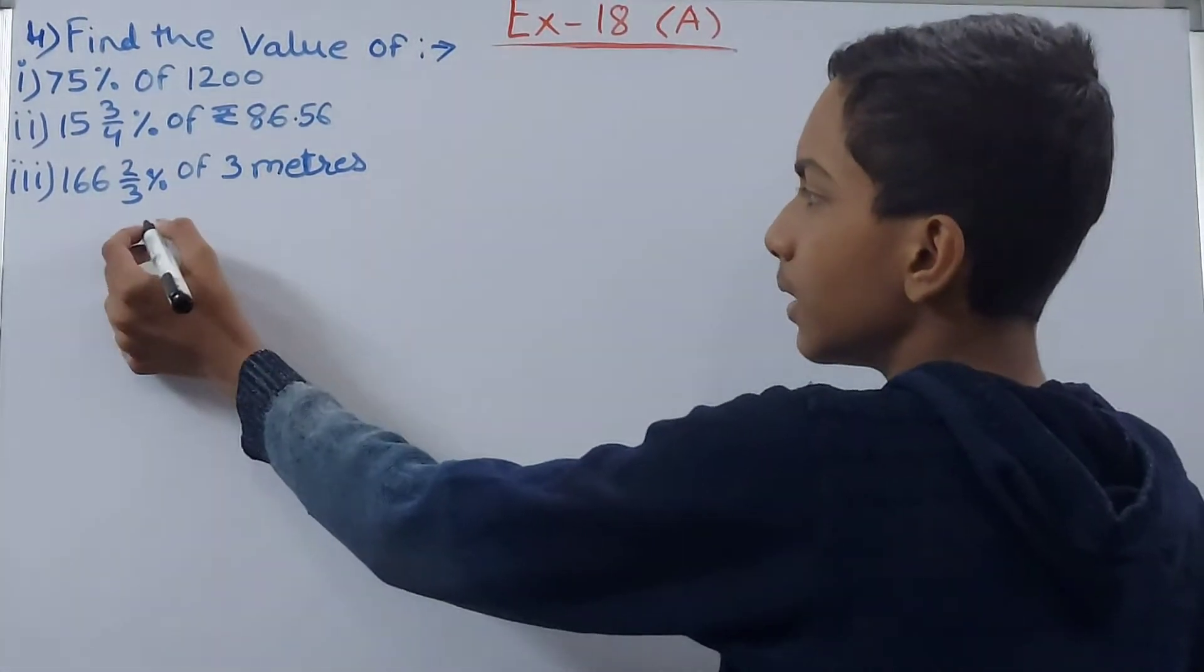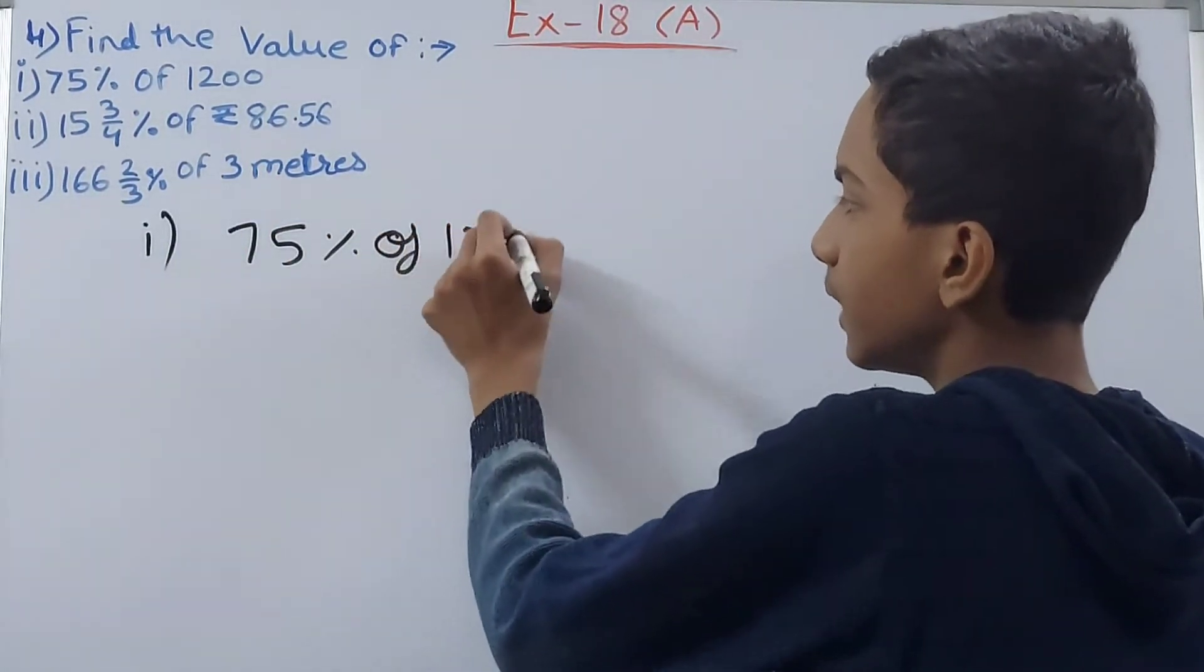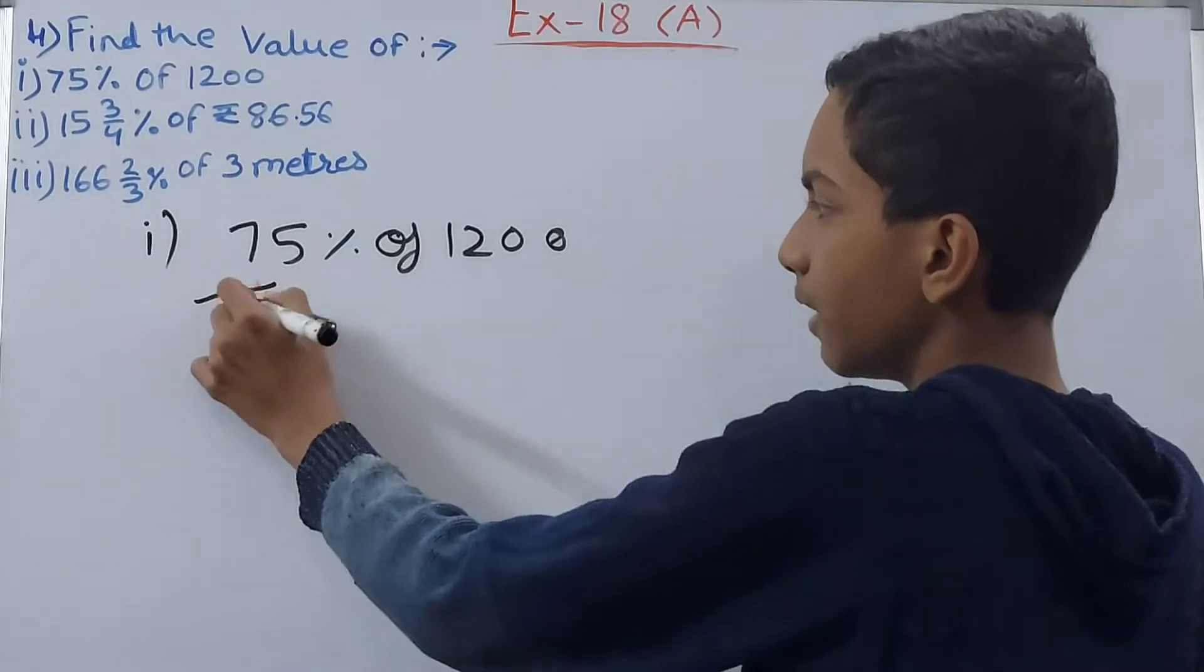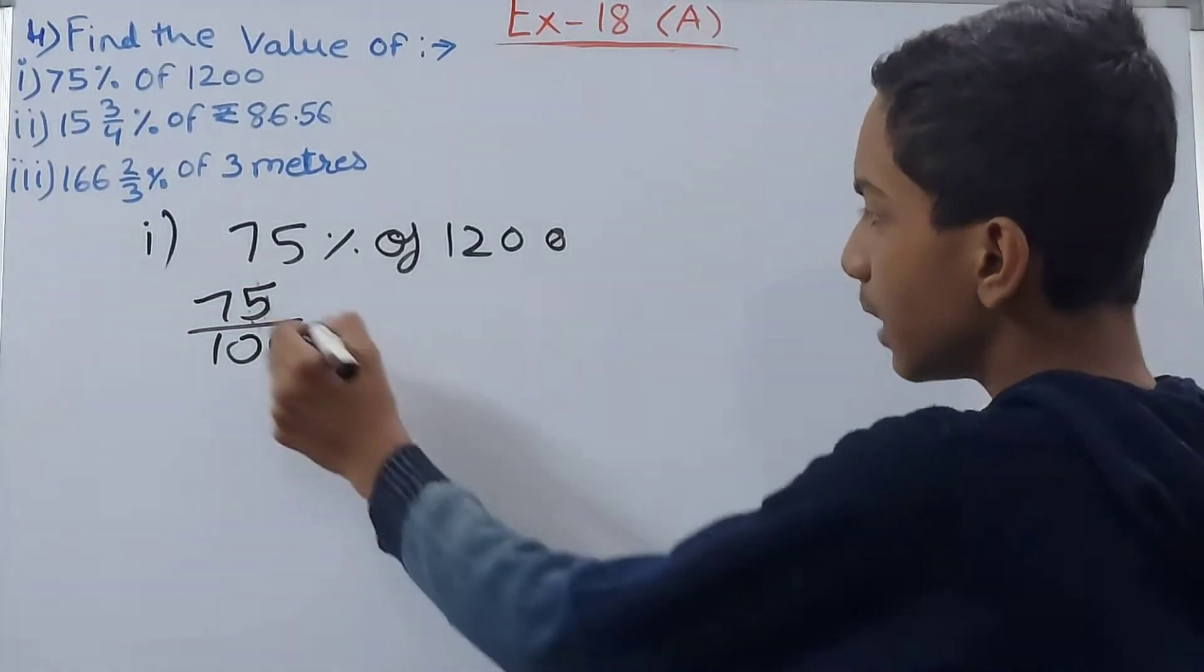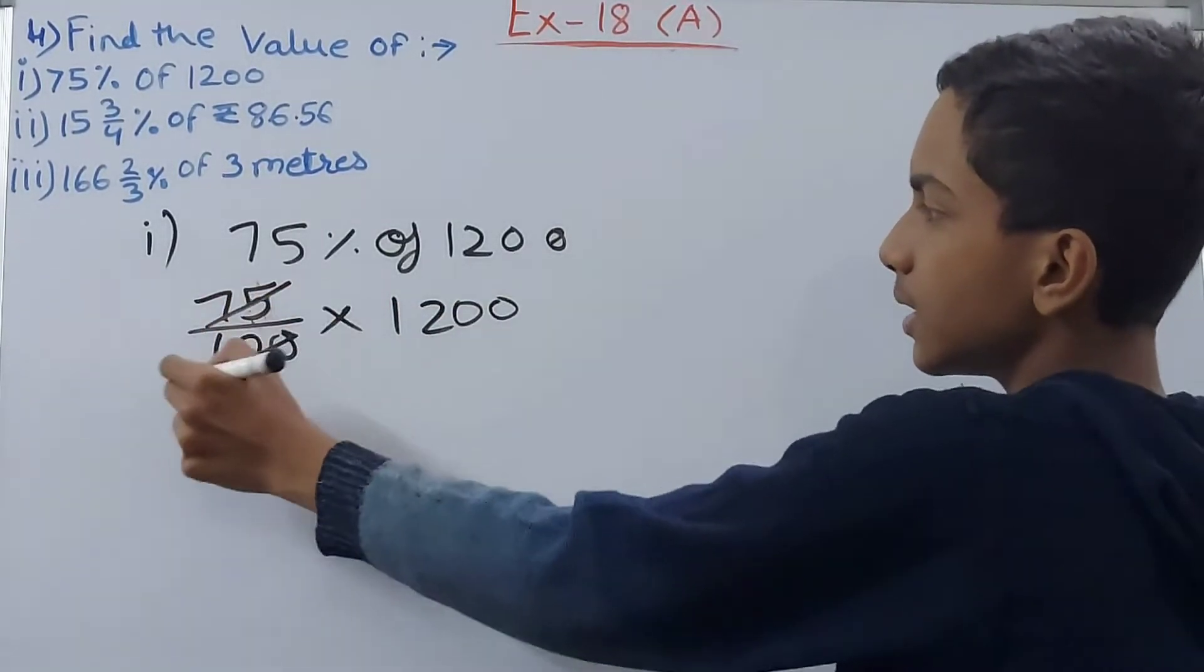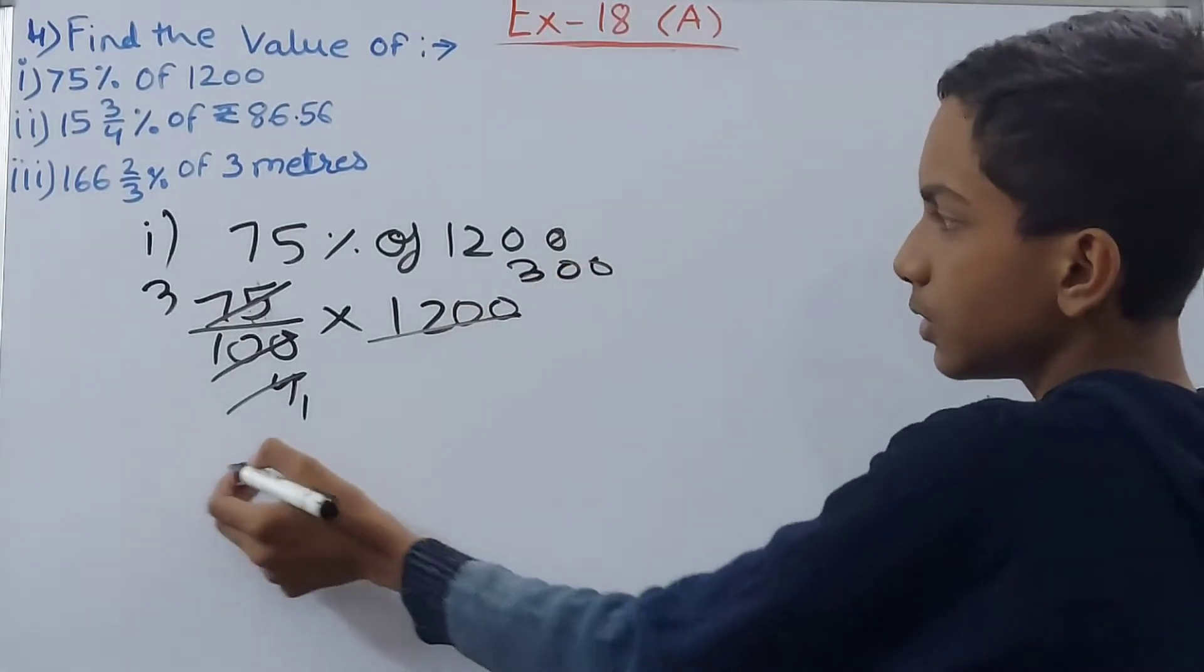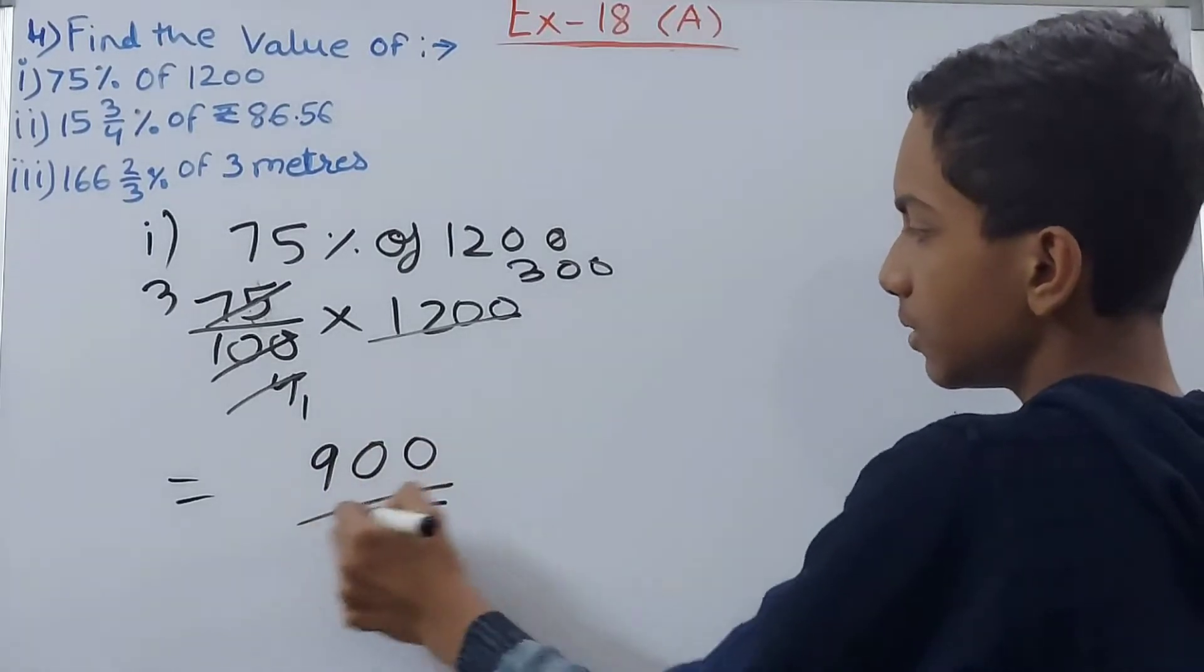First we have 75% of 1200. 75% means 75 upon 100. 'Of' will be replaced by the multiplication sign, and then 1200 as it is. I'll cancel this and this by 25, so 3 and 4. Now 1 and this will be 300. We get 3 into 3 equals 9 and 2 zeros, so 900 becomes our answer.